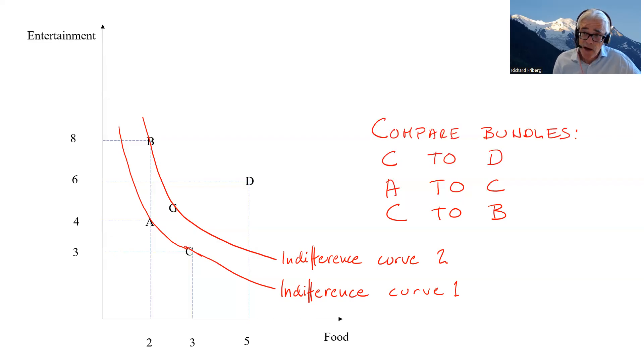So this shows how using indifference curves allow us to rank different bundles to say what we prefer the most. And then, typically, I mean, indifference curves that are further from the origin are preferred. Okay? So it's not necessarily bundles that are further from the origin that are preferred, but indifference curves that are further from the origin are preferred by the consumer. Okay?